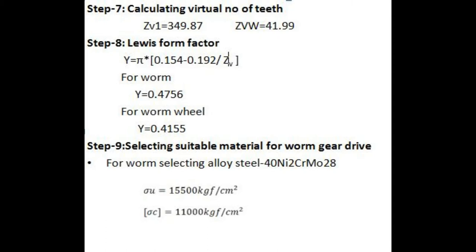Step 8: Calculating Lewis form factor. Y equals pi times 0.154 minus 0.192 divided by ZV, where ZV is virtual number of teeth. For worm, Y equals 0.4756. For worm wheel, Y equals 0.4155.